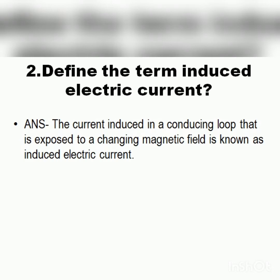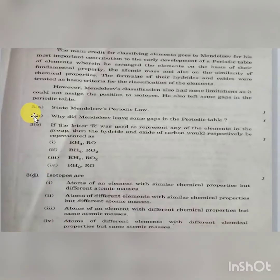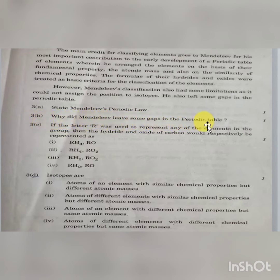Question 3A: State Mendeleev's periodic law. Question 3B: Why did Mendeleev leave some gaps in the periodic table? As you may know, there are some gaps in the periodic table — we need to explain why those were left.